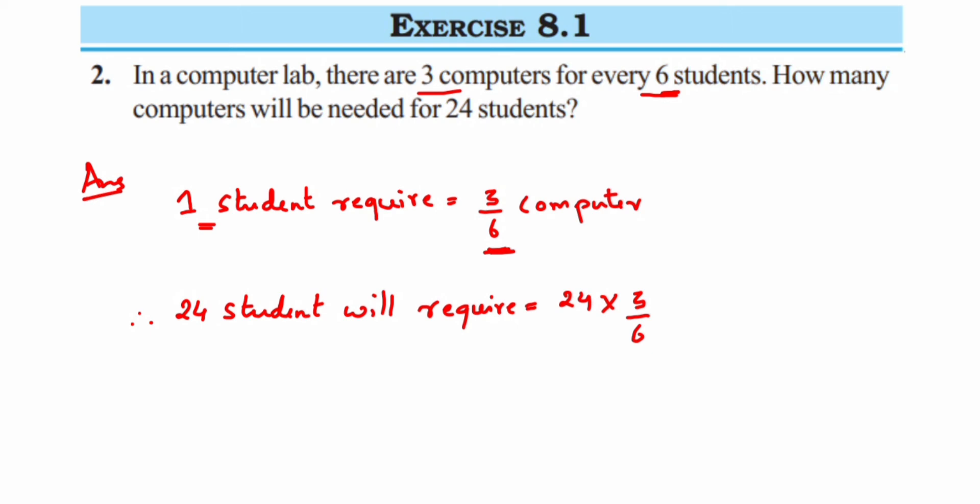What we're calculating - we're calculating for one student, so that should come in the denominator. So you can cancel 6 and 24: 6 ones are 6, and 6 fours are 24, so 3 fours are 12. So we got the answer.